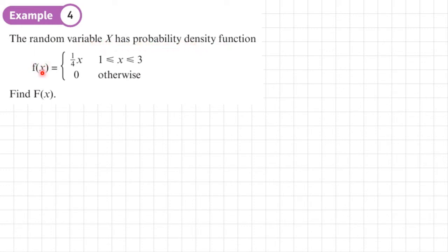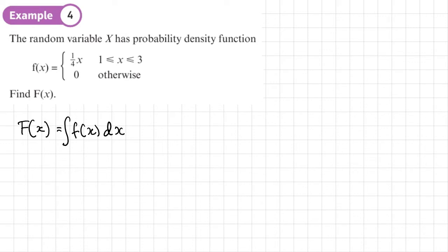For the example: the random variable X has probability density function f(x) = (1/4)x for x between one and three inclusive, and zero otherwise. To find the CDF F(x), we integrate the PDF without limits. Integrating (1/4)x dx gives (1/4)x²/2, which is (1/8)x² + C.